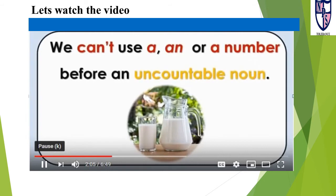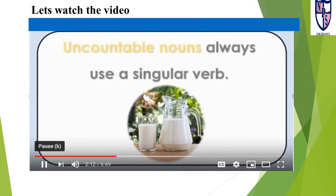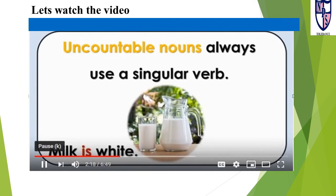With uncountable nouns, we can't use a, an, or a number before them. Uncountable nouns always use a singular verb. Milk is white — milk is uncountable, so we must use a singular verb.